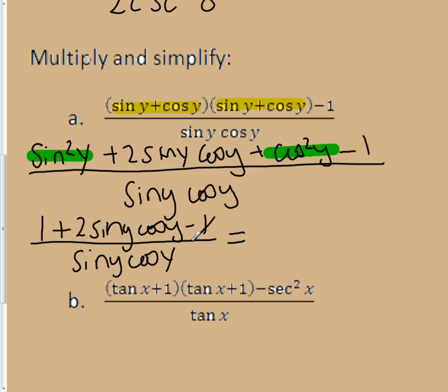But this one and this one cancel out, so I'm just left with 2, the sine of y, cosine of y, over the sine of y, cosine of y. But this sine cancels with this one, and this cosine cancels with this one, so I'm just left with 2.